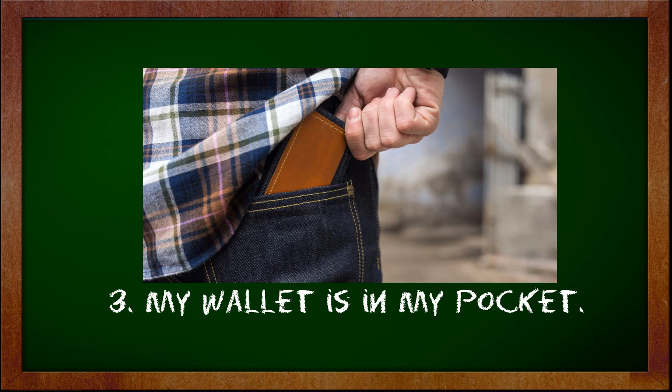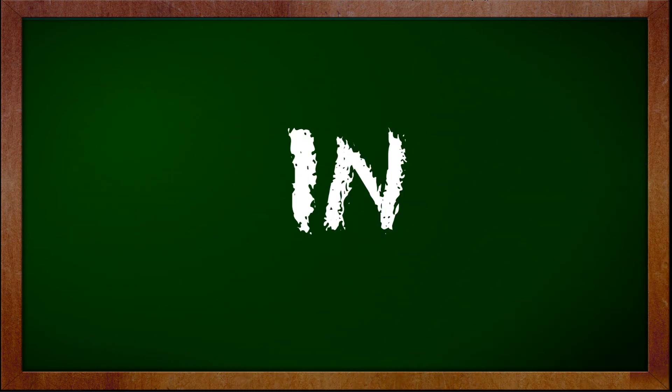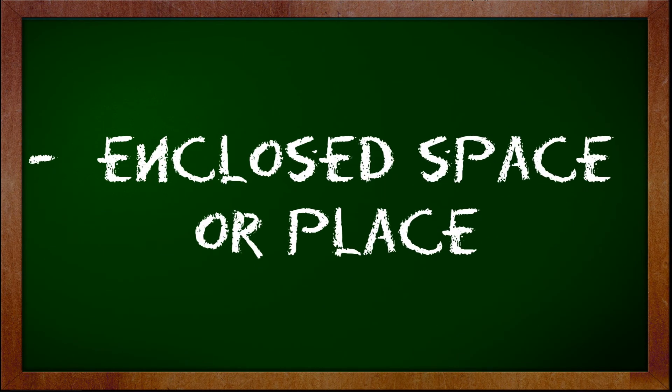Number three. My wallet is in my pocket. We use in because a pocket is an enclosed space. So, in the sentence, my wallet is in my pocket, the wallet is inside the pocket. Is it clear with you now the usage of the preposition in with place? Again, in is used to indicate an enclosed space or place.